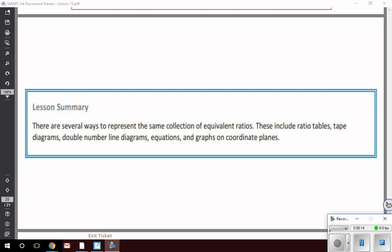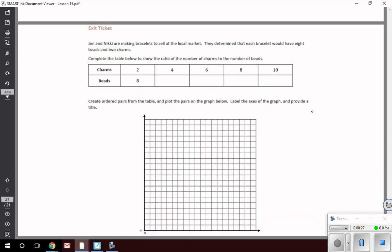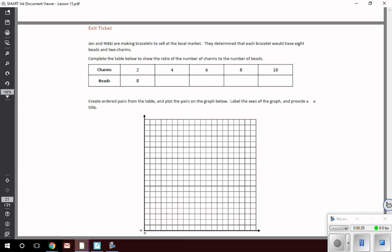There are several ways to represent the same collection of equivalent ratios. These include ratio tables, tape diagrams, double number line diagrams, equations, and graphs on the coordinate plane. So we're going to use some of these methods for this particular problem.